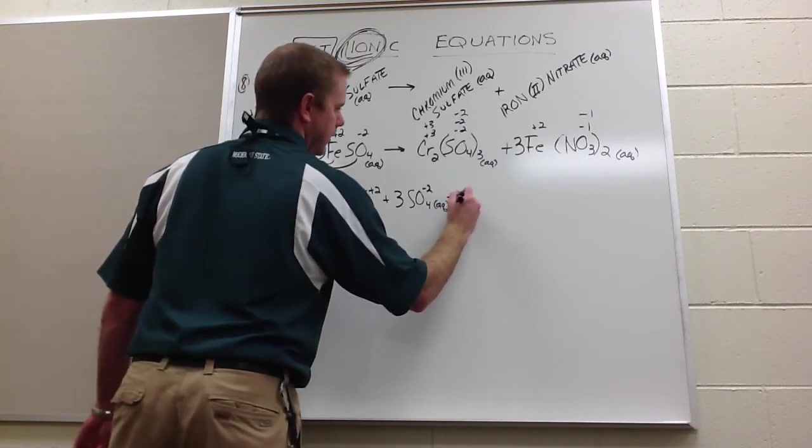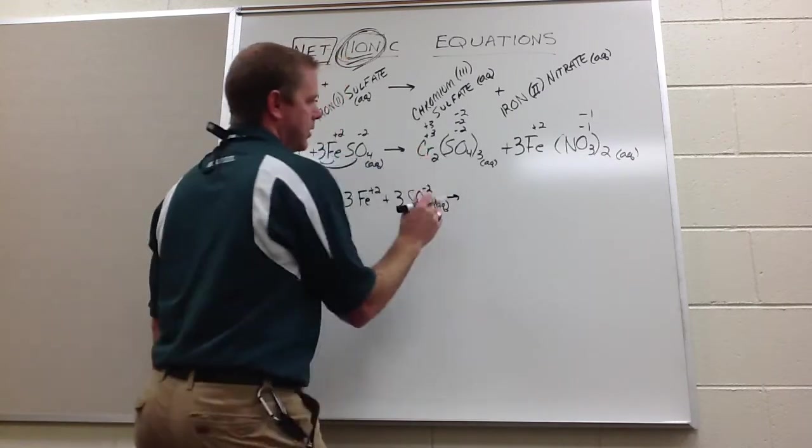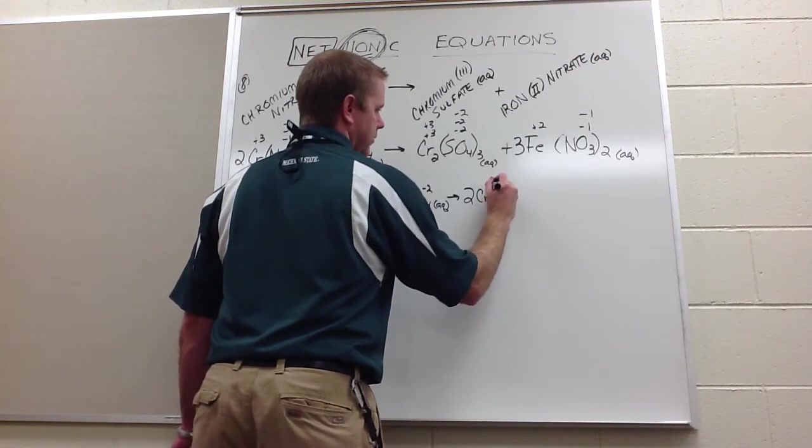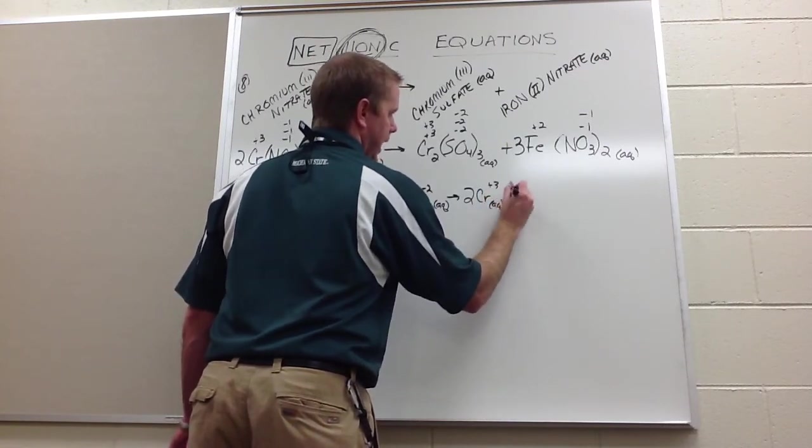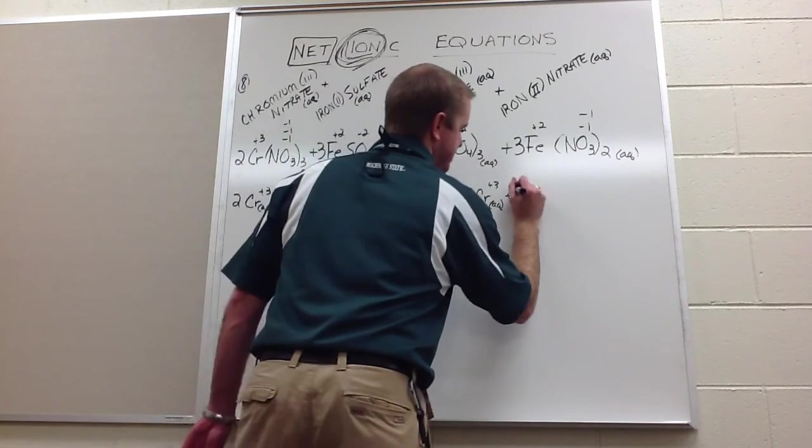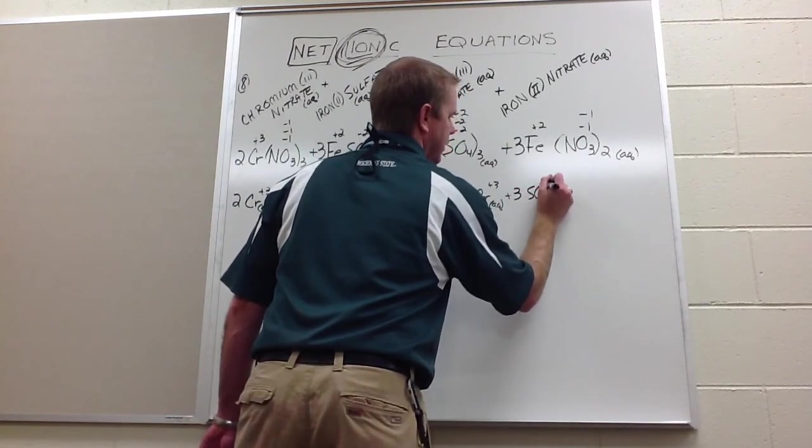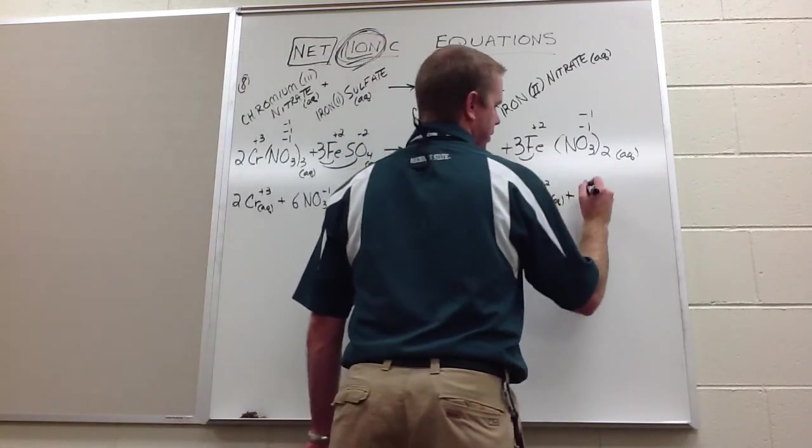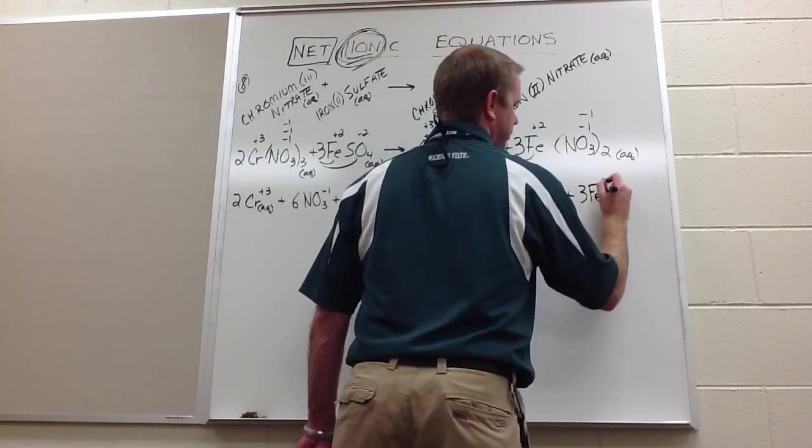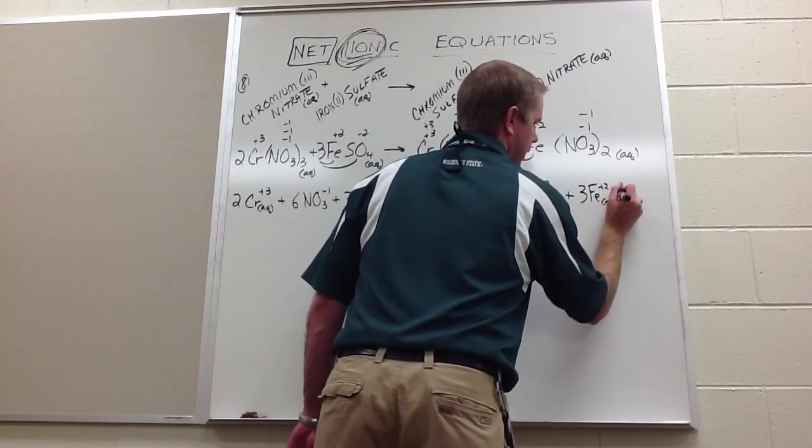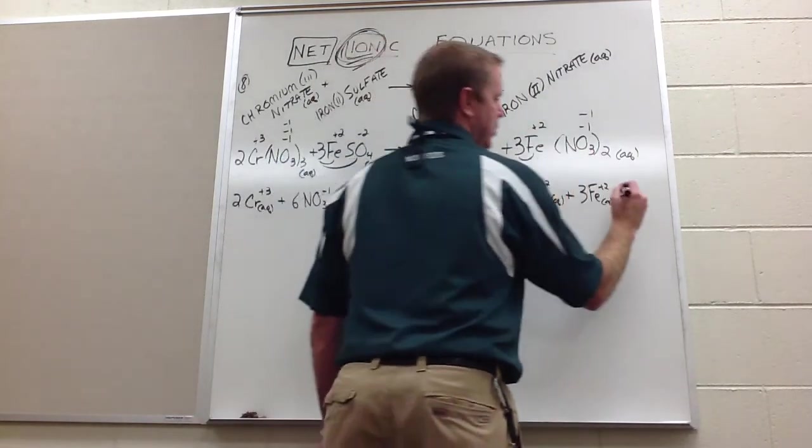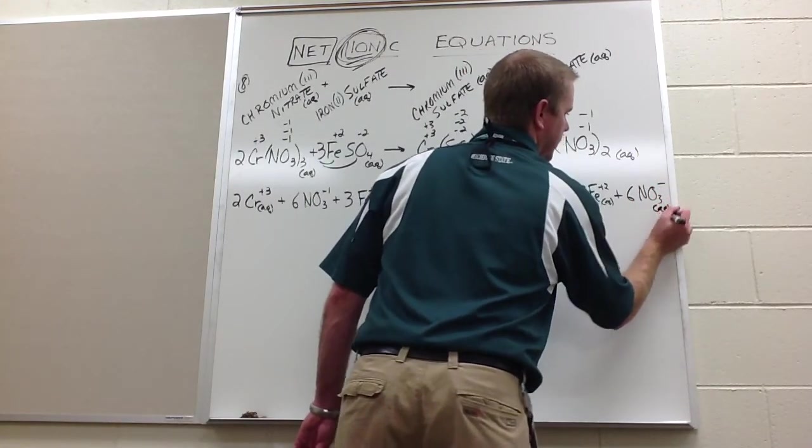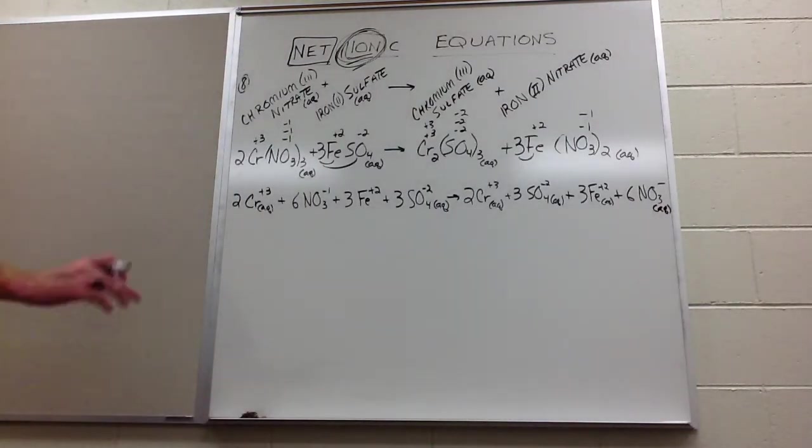I'm going to start writing a little tighter. Here you end up with two Cr plus three aqueous ions and three SO4 negative two aqueous ions. Here we end up with three Fe plus two aqueous ions and three times two, six NO3 minus one aqueous ions. Hopefully you can do that breakdown, guys. That's a big part of this.